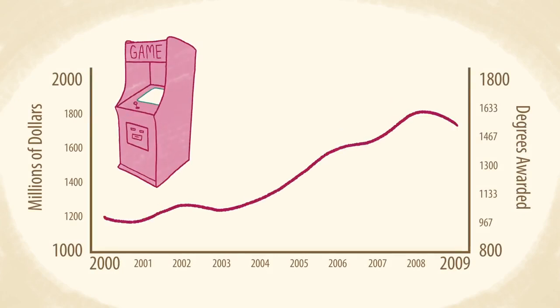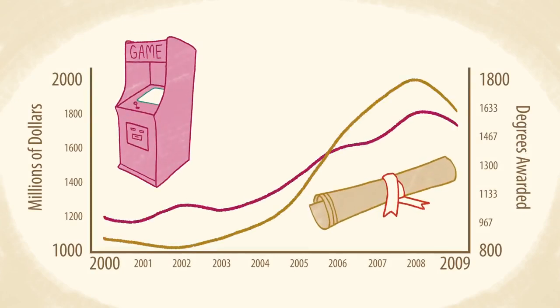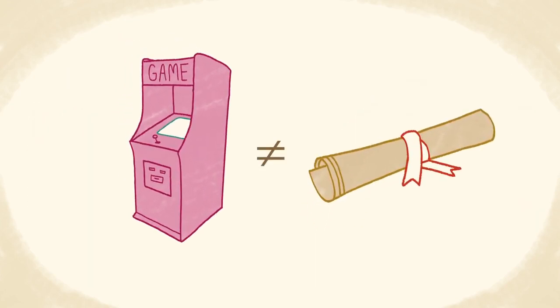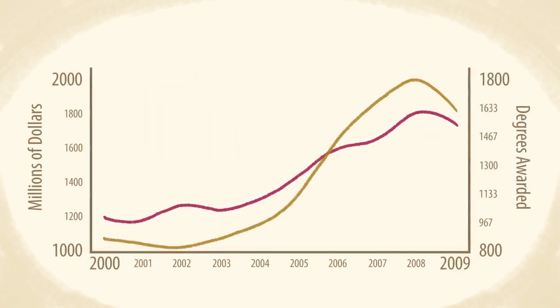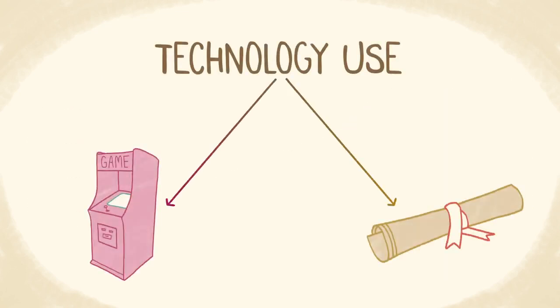Similarly, revenue from arcades rose along with the number of computer science doctorates awarded in the US. But based on this evidence alone, we would not want to conclude that playing arcade games leads people to earn PhDs. There was likely a third factor at play. For instance, arcade revenue and computer science degrees may rise together at times when the use of technology is increasing nationwide. It might be the increase in technology use that caused increases in both game revenue and computer science degrees.